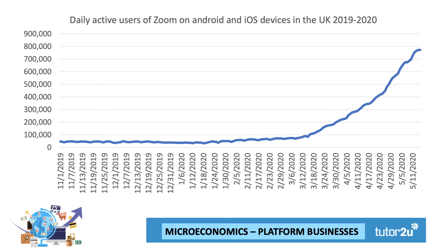Perhaps the prime example of this is the communications app Zoom, which is clearly a major beneficiary of millions of people having to work and study from home during the pandemic. This chart shows the average daily number of people in the UK logging on to Zoom services, climbing from about 80,000 in the middle of March 2020 to a peak of closing on 800,000 in the middle of May 2020.